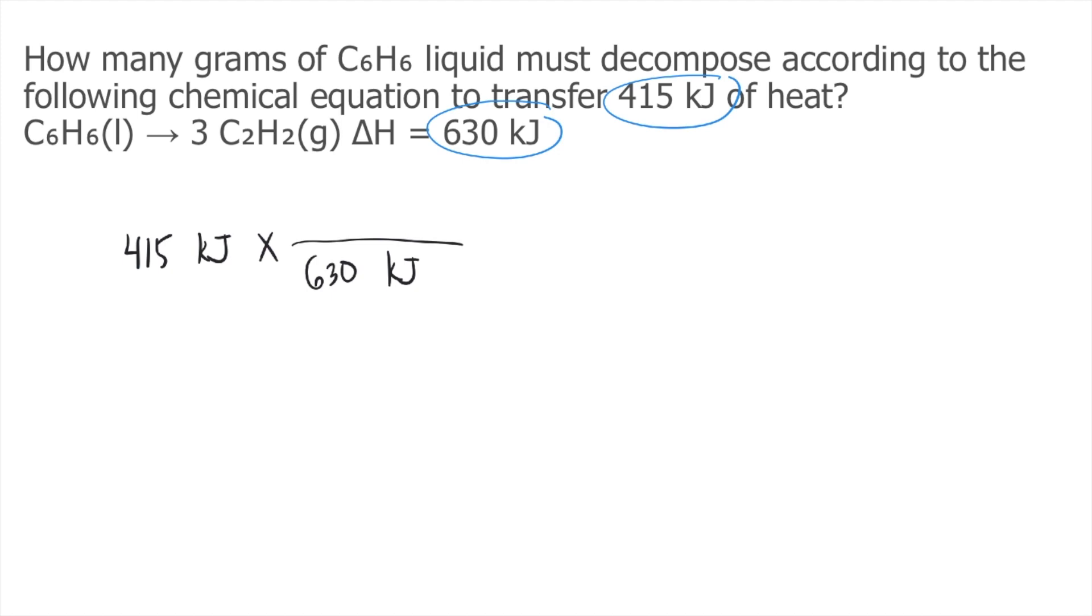On top, as you can see in the reaction, we have 1 mole of C6H6, so you put on top 1 mole of C6H6. The kilojoules will cancel and now you have moles of C6H6. The problem is asking for grams of C6H6, so we need to convert moles into grams using the molar mass of C6H6.